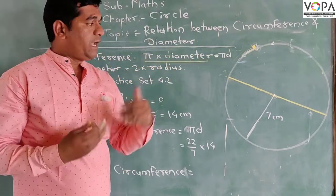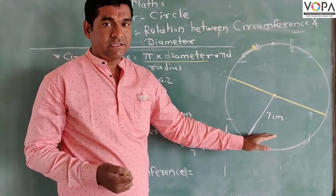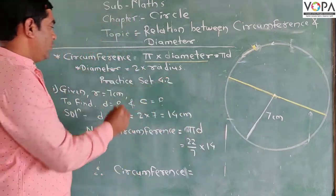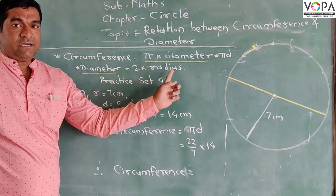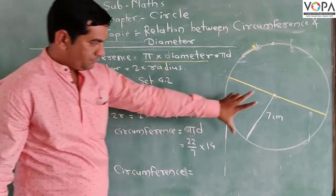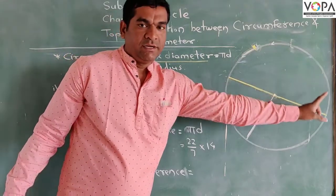But if diameter is not given and the radius is given instead, then diameter equals two times the radius. Diameter is equal to 2 times radius.